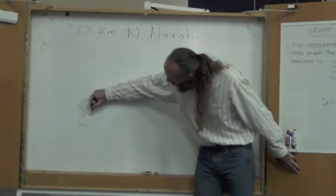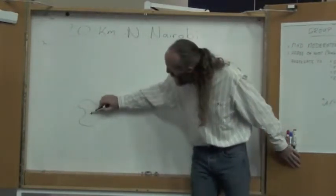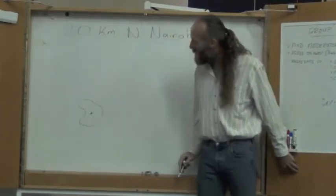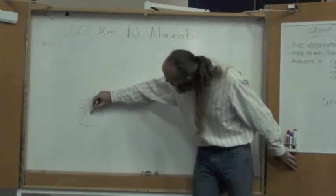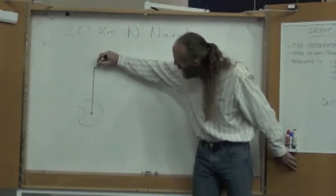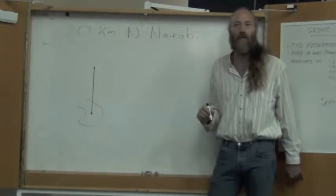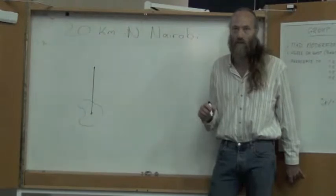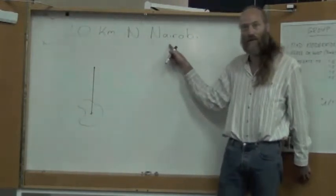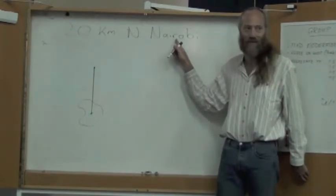The center of Nairobi is here. I'm going to go 20 kilometers north to here. It's not very bright. Like that. So, this is a point that is 20 kilometers north of the center of Nairobi. It's not exactly what this says. Right? Because this doesn't say the center of Nairobi. It's Nairobi.